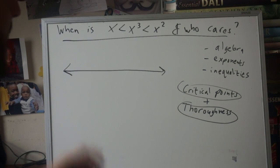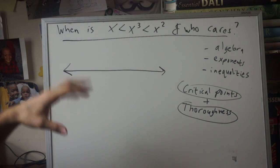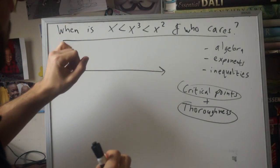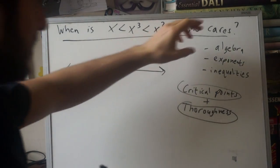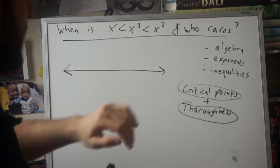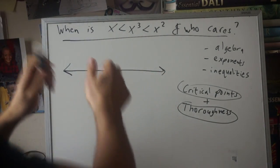Now in previous videos we've been doing algebra, inequalities, and other things, so this is a nice little problem that I thought would tie in several things: the algebra, exponents, inequalities, and also illustrate a new thing. So when is x less than x cubed less than x squared?